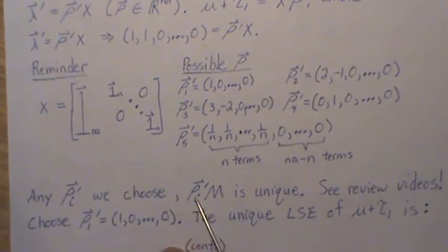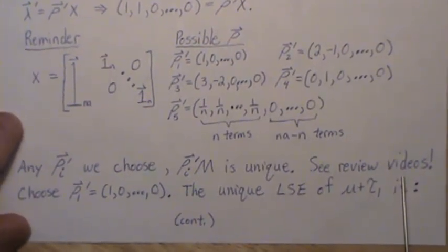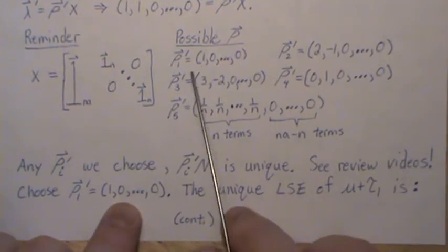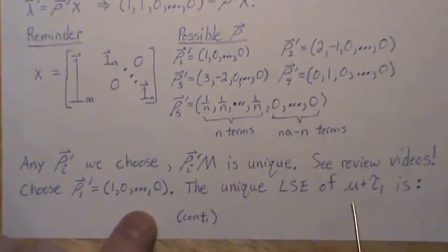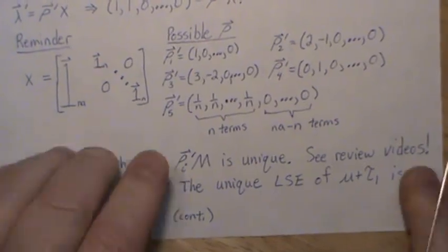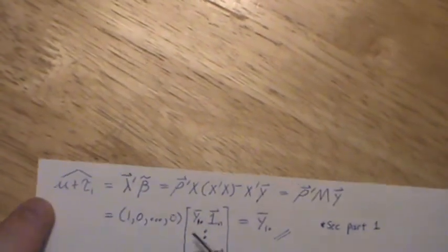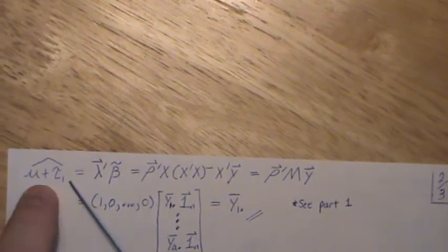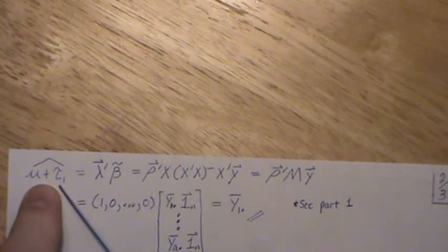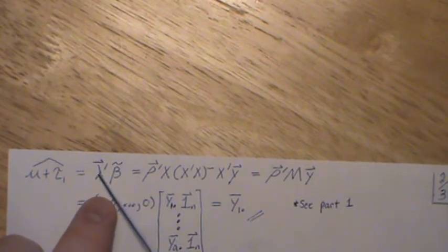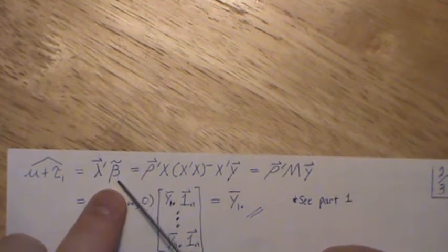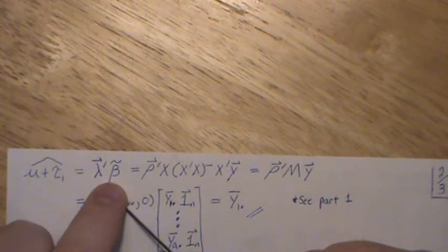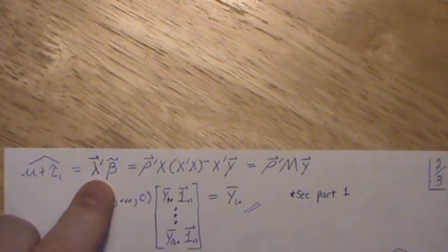So let's just pick the easy one and really see the review videos on estimability. Let's choose the easy one, which was this row 1. It's a 1 and the rest 0s. So then the unique least squares estimate of the first treatment effect is this. So we plug in, this is the estimate of the first treatment effect. This was 1, 1 and the rest 0s.